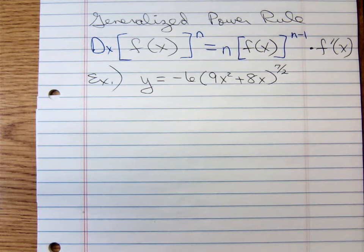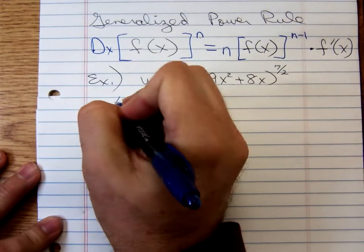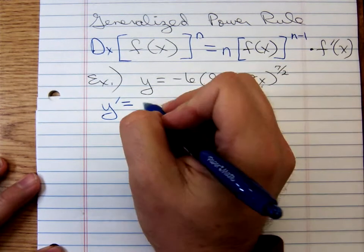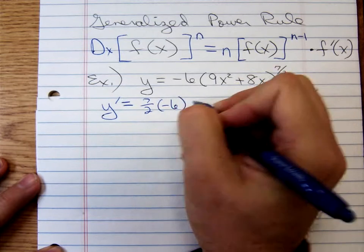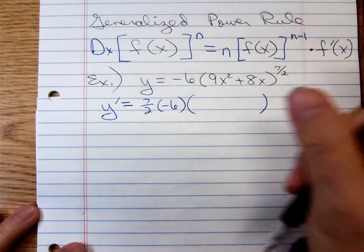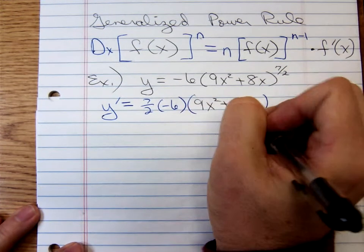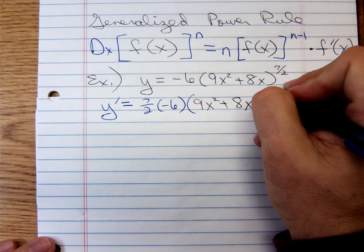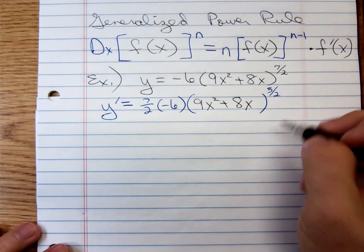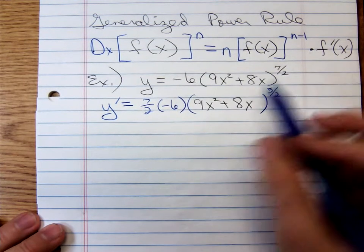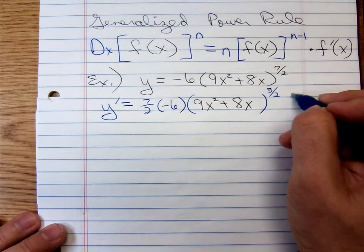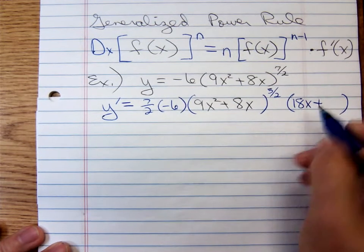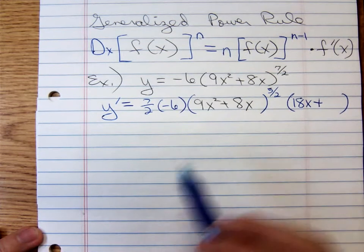This is a good example of the generalized power rule. To find y prime, take the 7 halves and multiply it by the coefficient: 7 halves times negative 6. The inside stuff stays the same — 9x squared plus 8x — and we bring down the exponent, subtracting 1: 7 halves minus 2 halves gives a new exponent of 5 halves. We then multiply by the derivative of the inside stuff. The derivative of 9x squared is 18x, plus the derivative of 8x which is just 8.